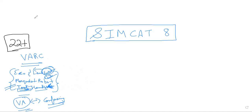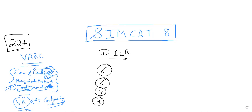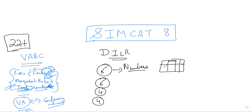Now coming to DILR — there were two sets of six questions each and two sets of four questions each. One set was based on the number system, averages, and numbers. There was one six-marker set I couldn't remember right now. Then there was a three-by-three matrix set where you had to arrange people with different schools and different attributes.